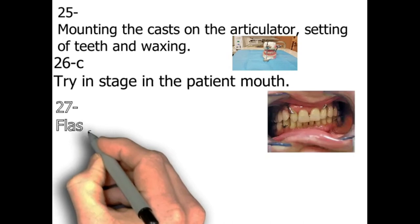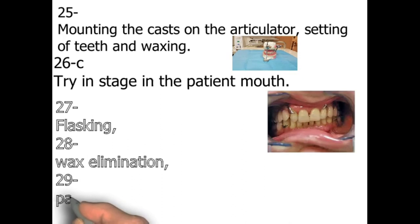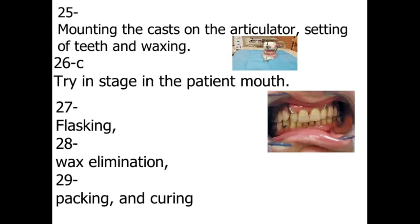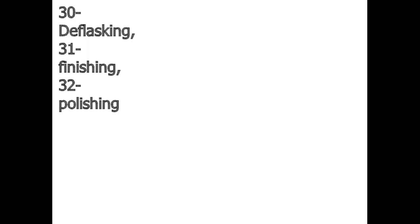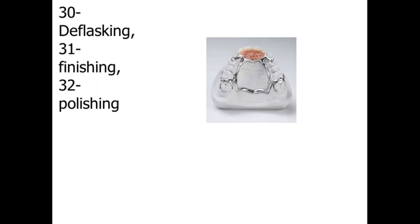Step number twenty-seven: flasking. Step number twenty-eight: wax elimination. Step number twenty-nine: packing and curing — these are well-known steps that every technician and technologist knows. Step number thirty: deflasking. Step number thirty-one: finishing. Step number thirty-two: polishing.